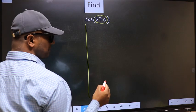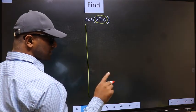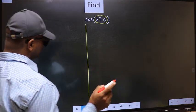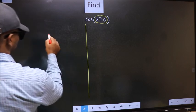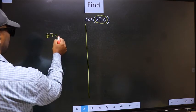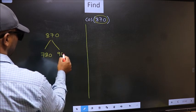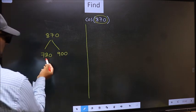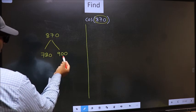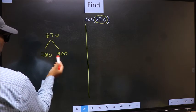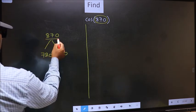870 lies between which two multiples of 180? What I mean is, 870 lies between 720 and 900. This is 180 into 4, this is 180 into 5. Between these two numbers, 870 lies.